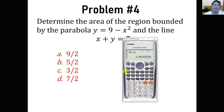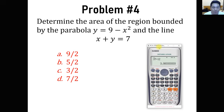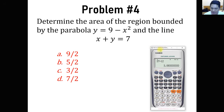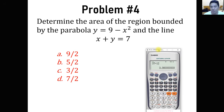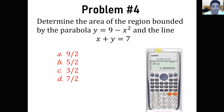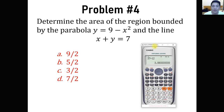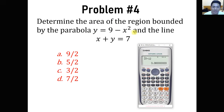Going now to problem number 4: determine the area of the region bounded by the parabola y equals 9 minus x squared and the line x plus y equals 7. Here we already have two curves — a parabola and a line. The difference from the previous problems is that we don't have the limits given, so we are going to solve for the limits. Express the line as y equals 7 minus x, then equate y upper and y lower: 9 minus x squared equals 7 minus x.